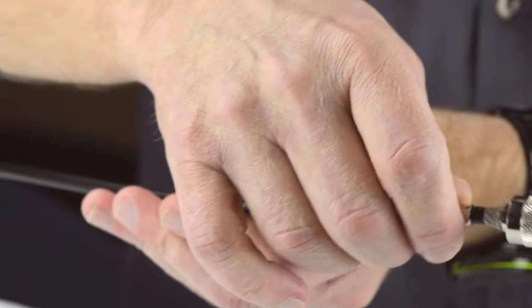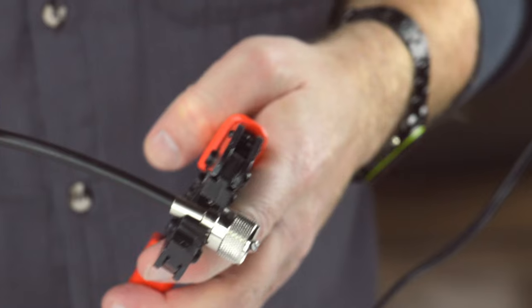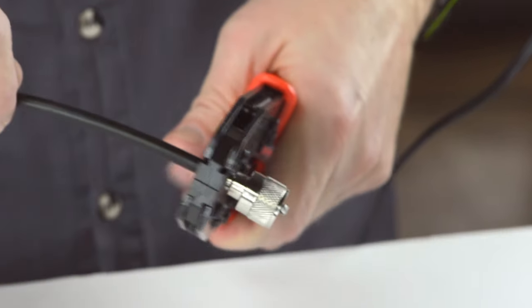Then, slide up the ferrule to the base of the connector, folding the shield with it. Crimp the ferrule onto the outer jacket to complete termination.